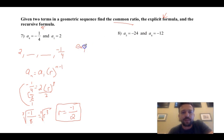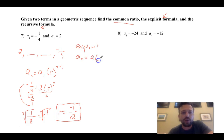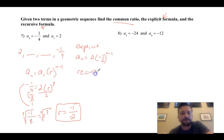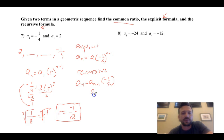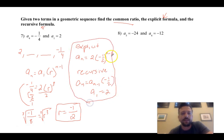Now to find the explicit formula: a sub n equals 2 times (negative 1 over 2) raised to the (n minus 1). There we go — we're done with the explicit. Now the recursive: a sub n equals a sub (n minus 1) times negative 1 half, with a sub 1 equals 2. So you've got your recursive and your explicit formulas.